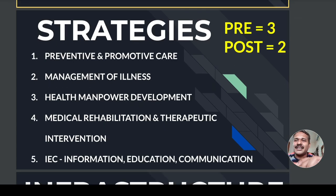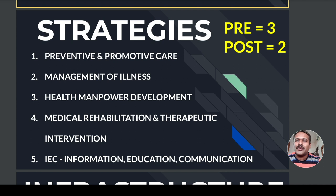What are the strategies? There are five strategies. I have classified them into three and two — three strategies prior to disease onset and two strategies after disease onset. The three strategies prior to disease onset are: first, preventive and promotive care; second, information, education and communication regarding geriatric problems; and third, health manpower development to deal with geriatric problems. The two post-disease strategies are: management of illness in the elderly, and if the disease is very severe, medical rehabilitation and therapeutic intervention in the elderly.